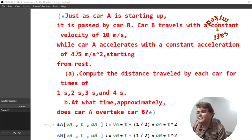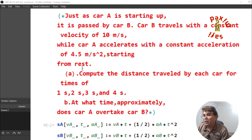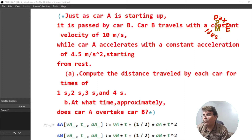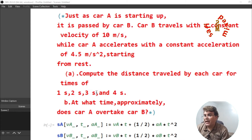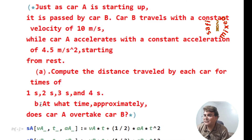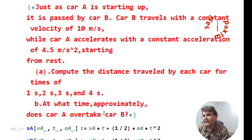Car A accelerates with a constant acceleration of 4.5 meters per second squared, starting from rest. Part A: compute the distance traveled by each car for times of one second, two seconds, three seconds, and four seconds. Part B asks: at what time approximately does car A overtake car B?